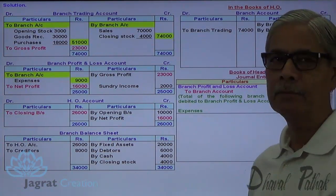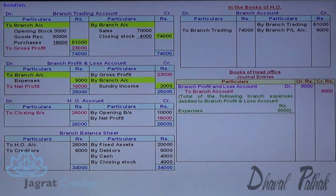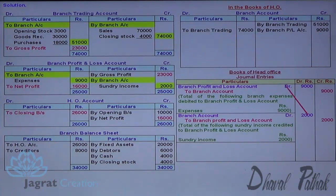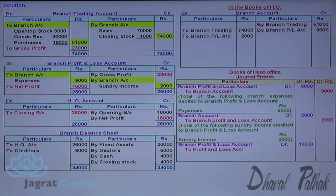Now, sundry income: profit and loss account is credited and branch account is to be debited because it's an absorption entry. So, branch account debit to branch profit and loss account credit for 1,000. The branch profit is transferred to general profit and loss account: branch profit and loss account debit to profit and loss account credit for 16,000, because profit of branch is credited to the general profit and loss account of HO.